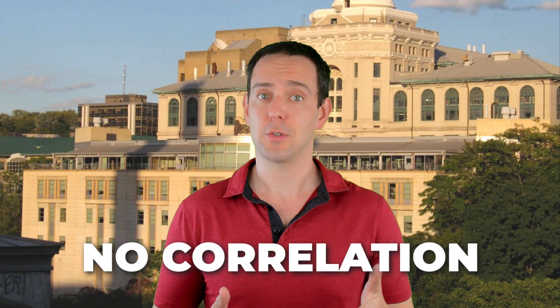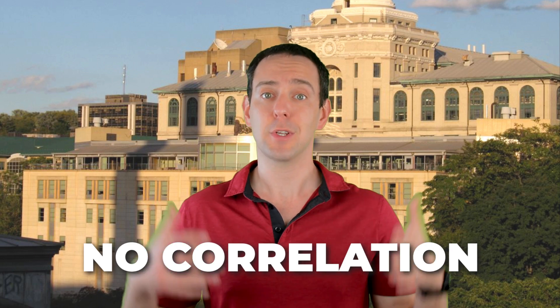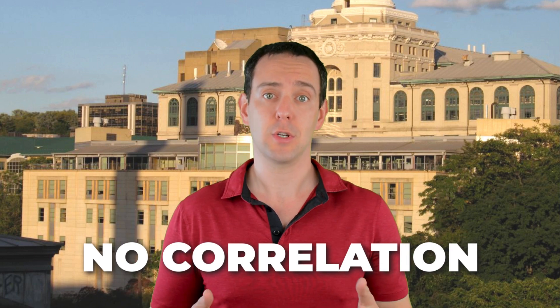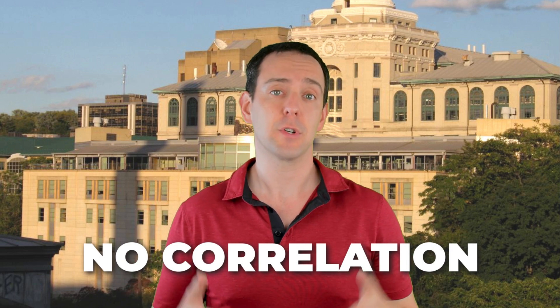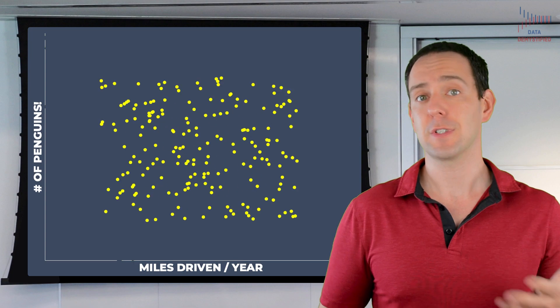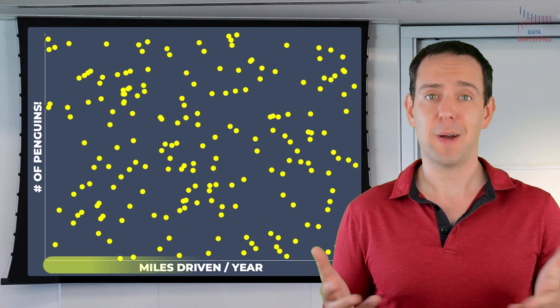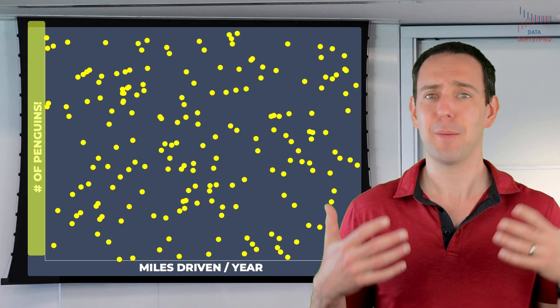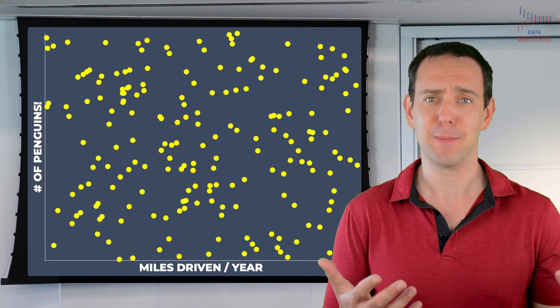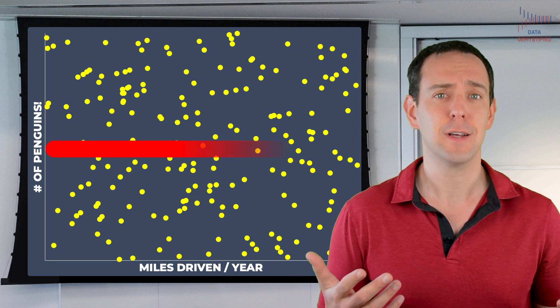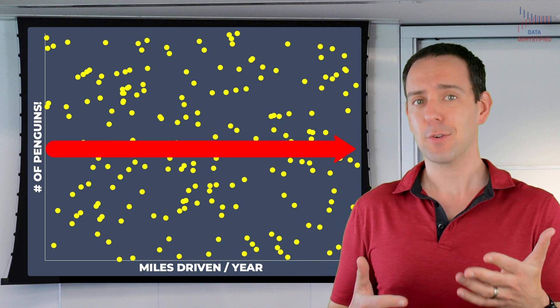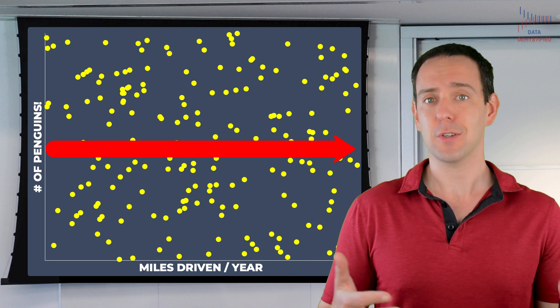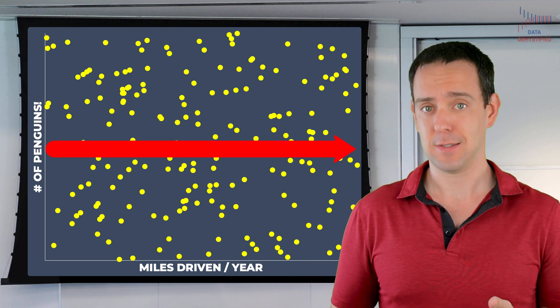You can also have a situation with absolutely no correlation where variables are totally independent. For example, the number of miles someone drives per year really has nothing to do with the number of penguin babies in Antarctica. A lack of correlation would actually look something like this.